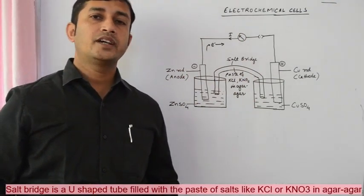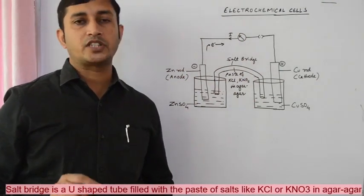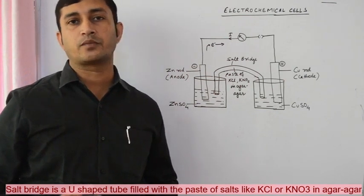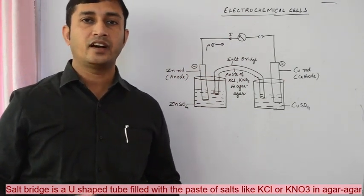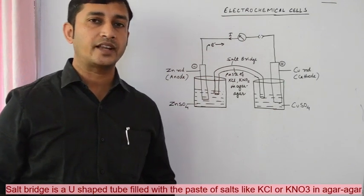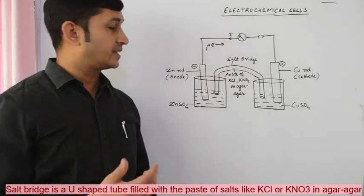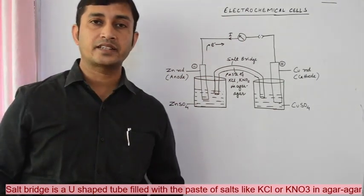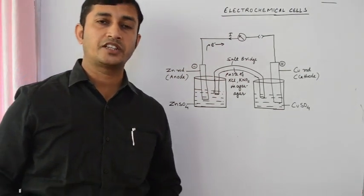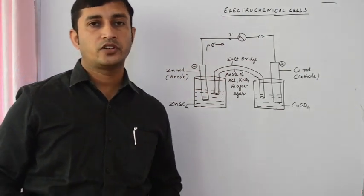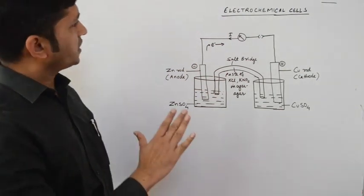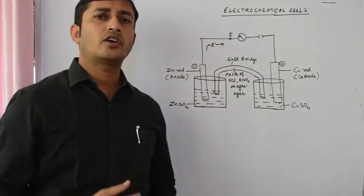The two electrolytic solutions are connected through a salt bridge. The salt bridge is a U-shaped tube which is filled with a paste of potassium chloride or potassium nitrate. The two main functions of the salt bridge are that it completes the inner circuit and also it maintains the electrical neutrality of the two solutions.